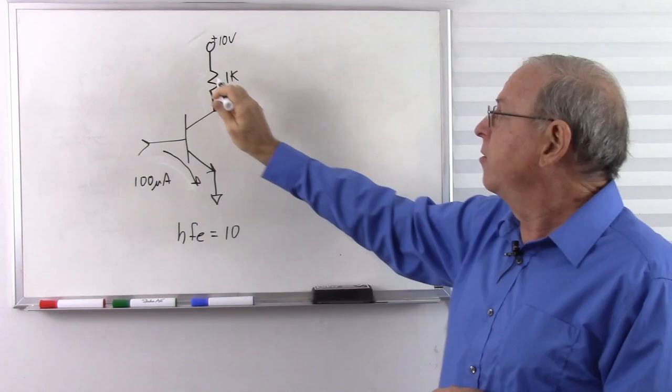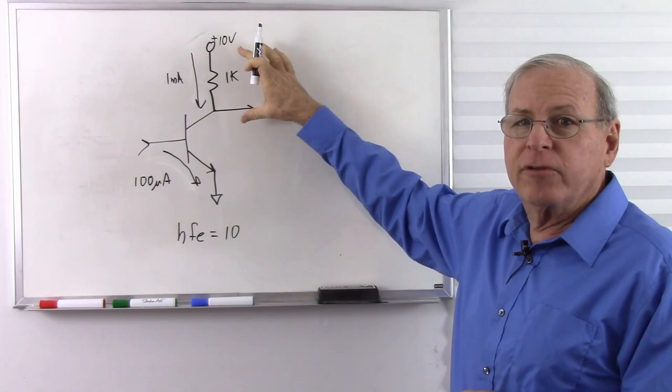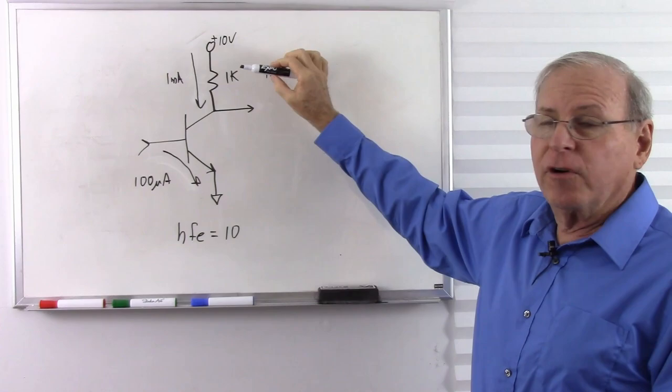Well, with an HFE of 10, I'm going to get 10 times that current into the collector. So I will get through the collector resistor, 1 milliamp. So 1 milliamp through 1K, what's the voltage I'm going to develop across this resistor? That's going to be 1 volt.